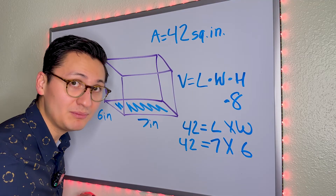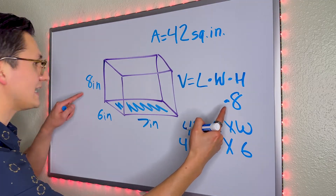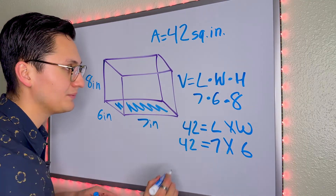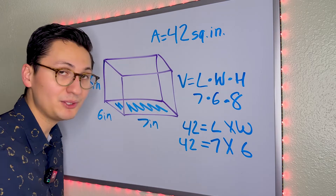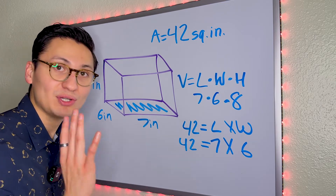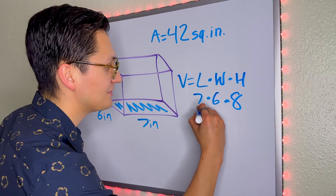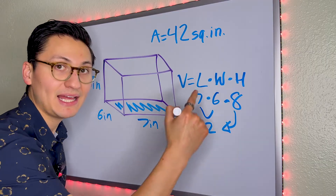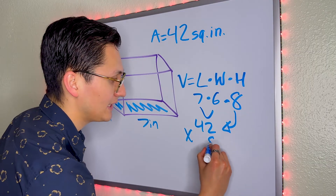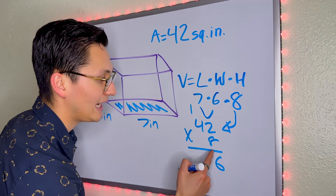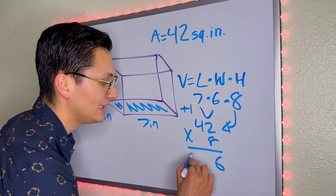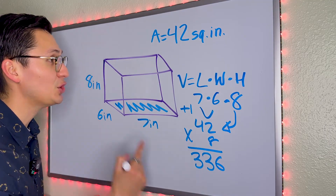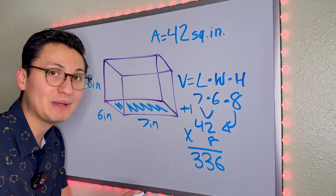Now can we find volume? The height is 8, the width is 6, and the length is 7 — we have everything we need. We know 7 times 6 is 42, so all we have to do is multiply by the height. 8 times 2 is 16, 8 times 4 is 32, plus 1 is 33. The answer is 336 cubic inches.